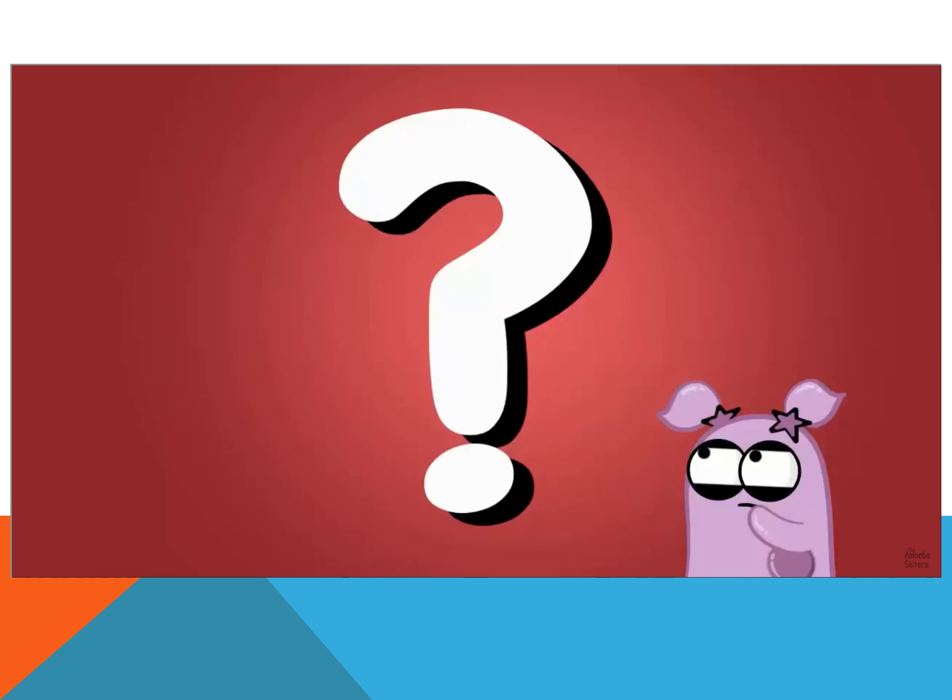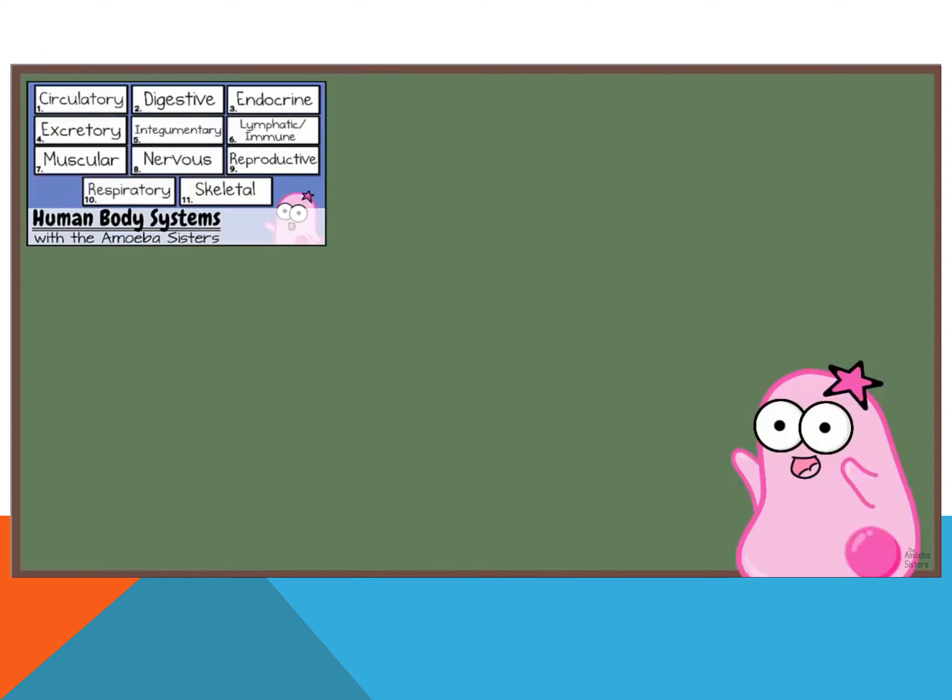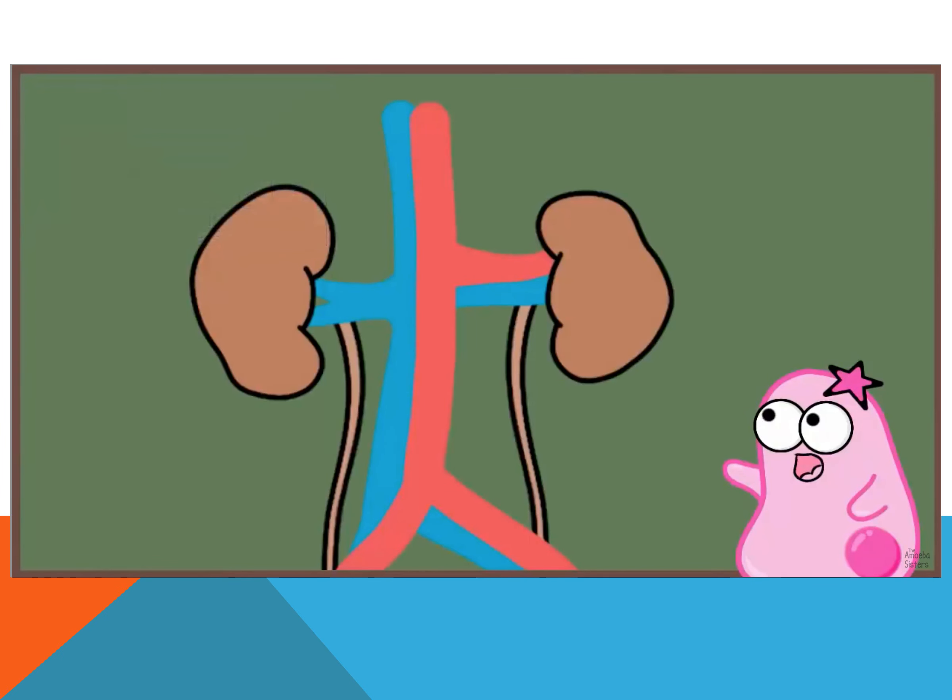Now, why does that matter? Well, this is really important because many of the processes that occur in organisms use water as a solvent. In our body system video, we talk about the function of kidneys, and you definitely couldn't have kidneys doing their function without water. Also, a main component for body fluids is water.